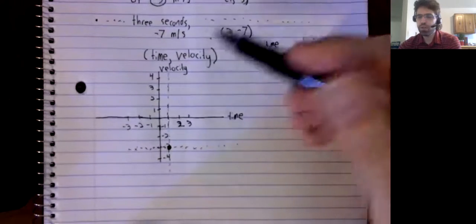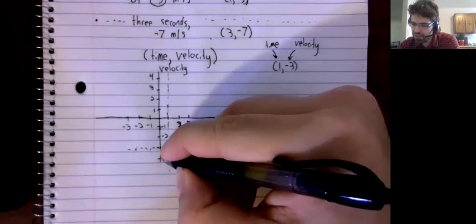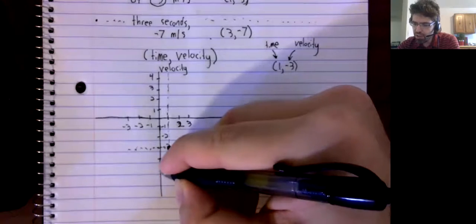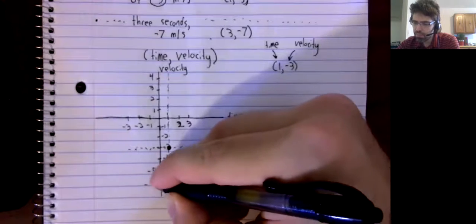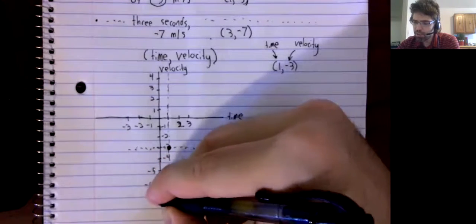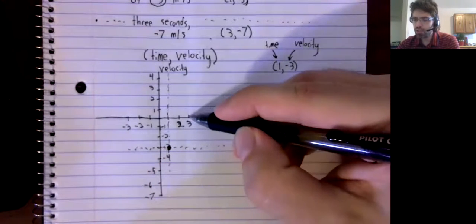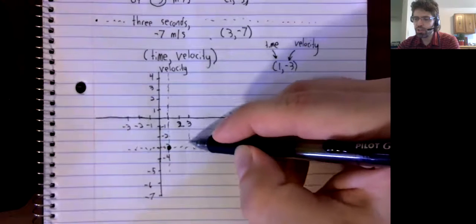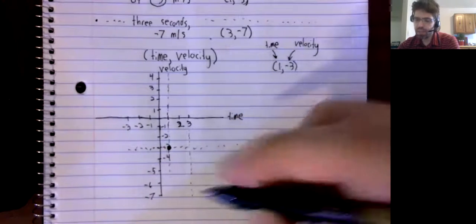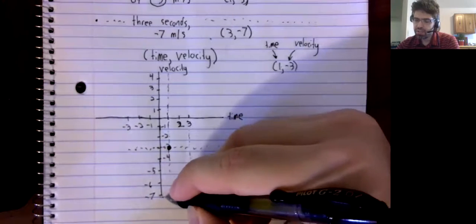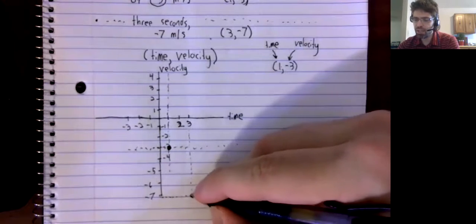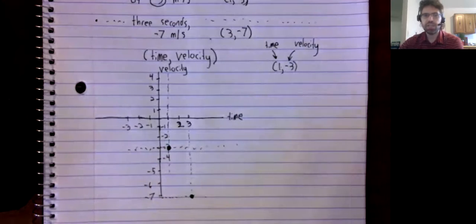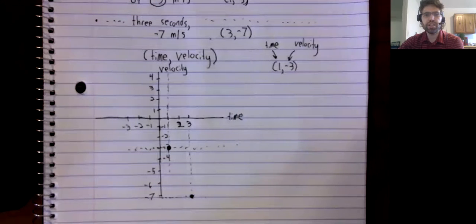For the point three comma negative seven: here's three on the time number line, here's negative seven on the velocity number line, and here's three comma negative seven.